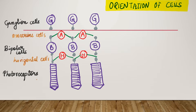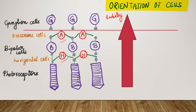These three cells — the photoreceptors, the bipolar cells, and the ganglion cells — are radially oriented. Apart from that, we also have some cells which are horizontally oriented, and these are the amacrine cells and the horizontal cells, labeled as A and H. For the purpose of Electrophysiology or Electroretinography, it is the radial cells which contribute to the majority of the electrical response coming out from the retina.